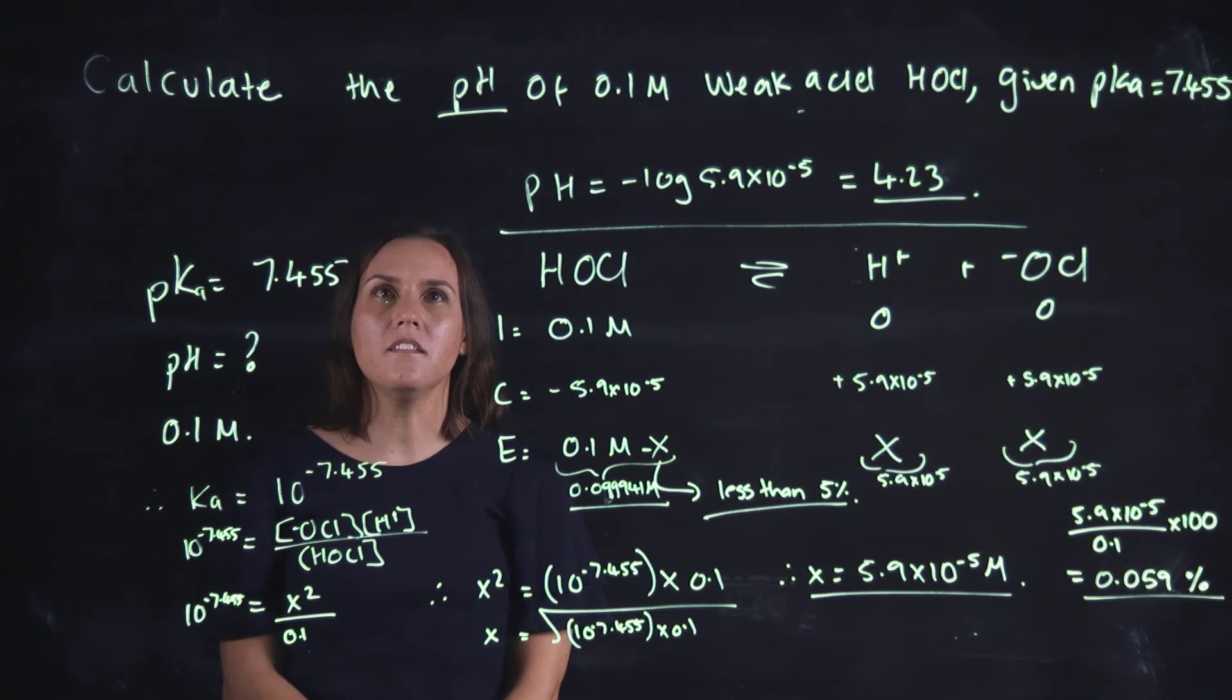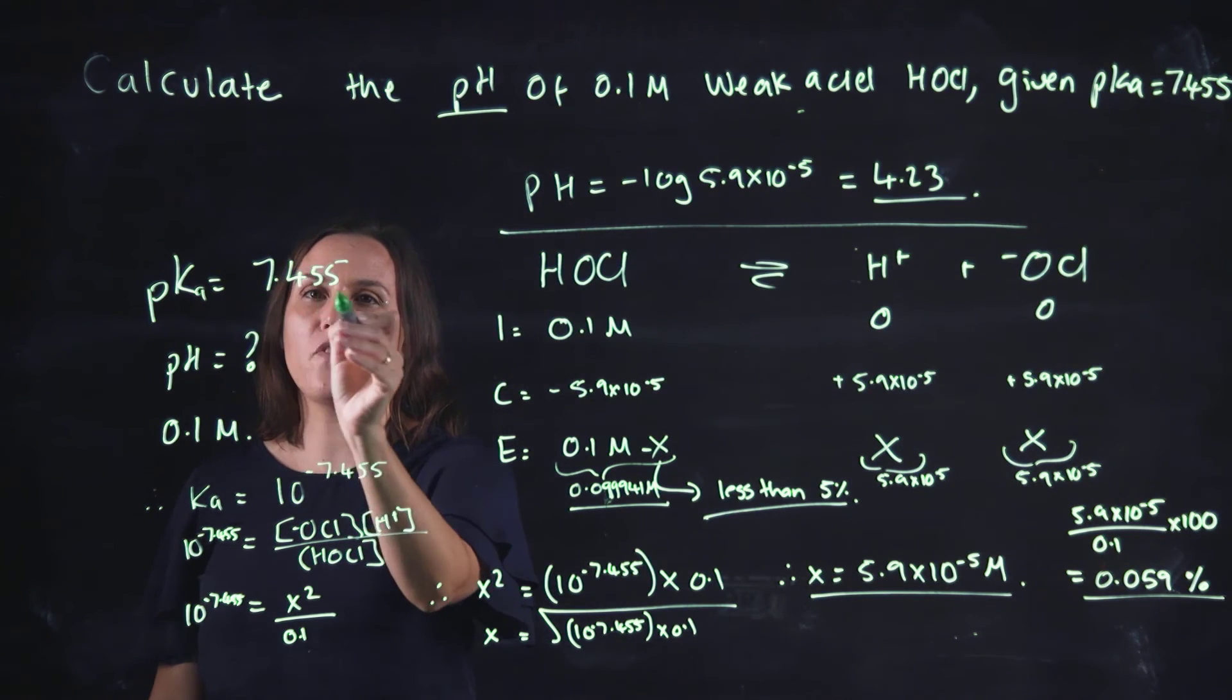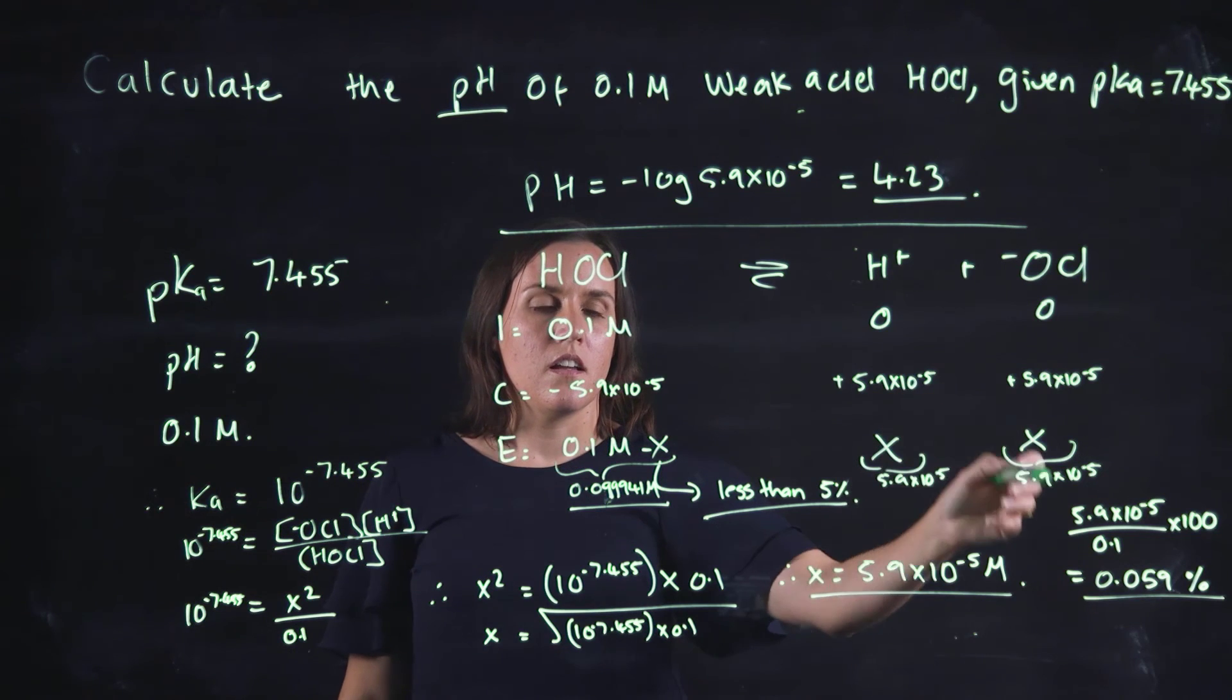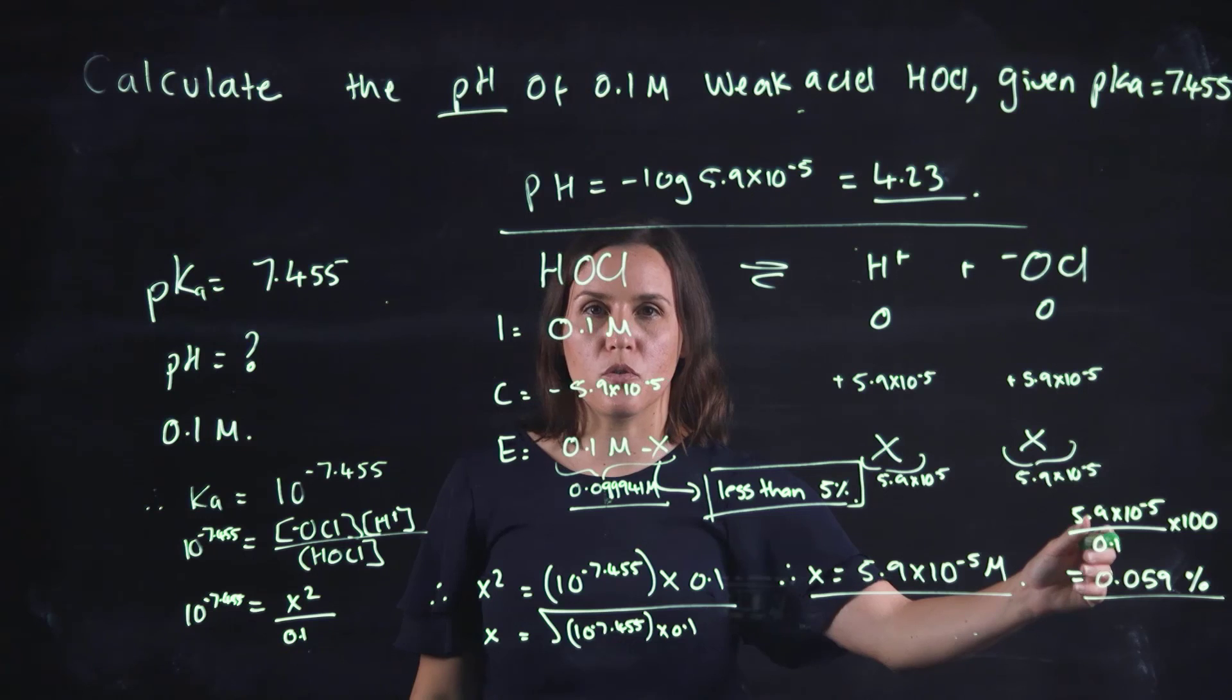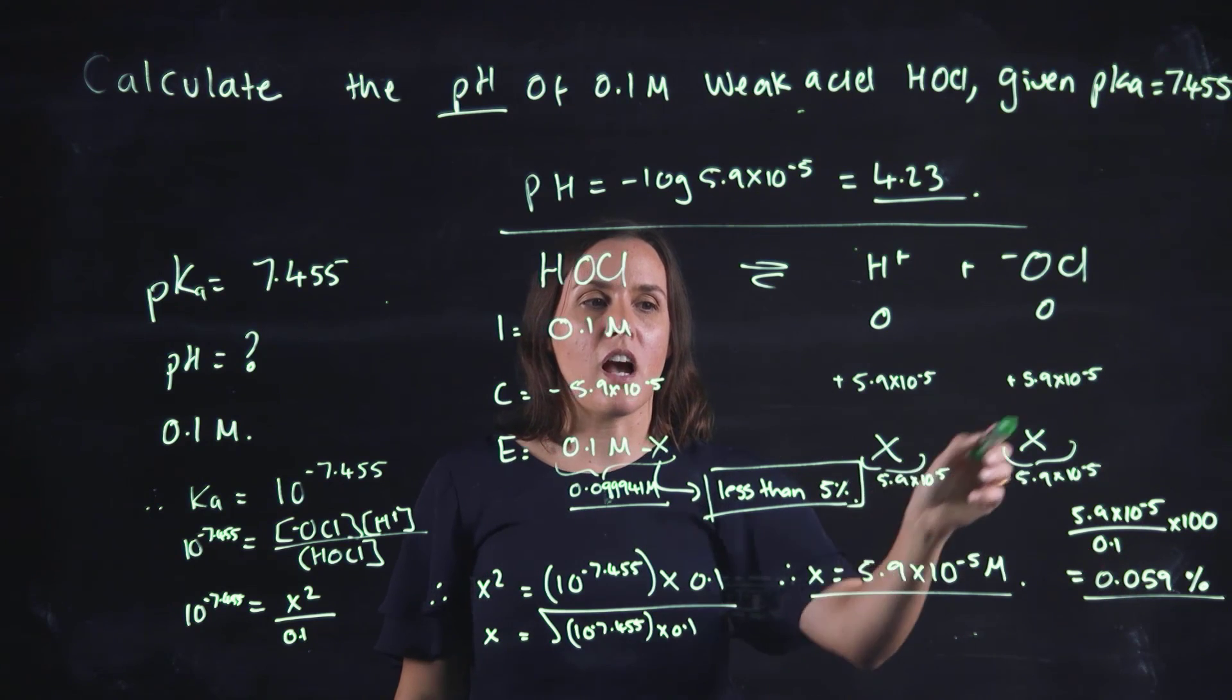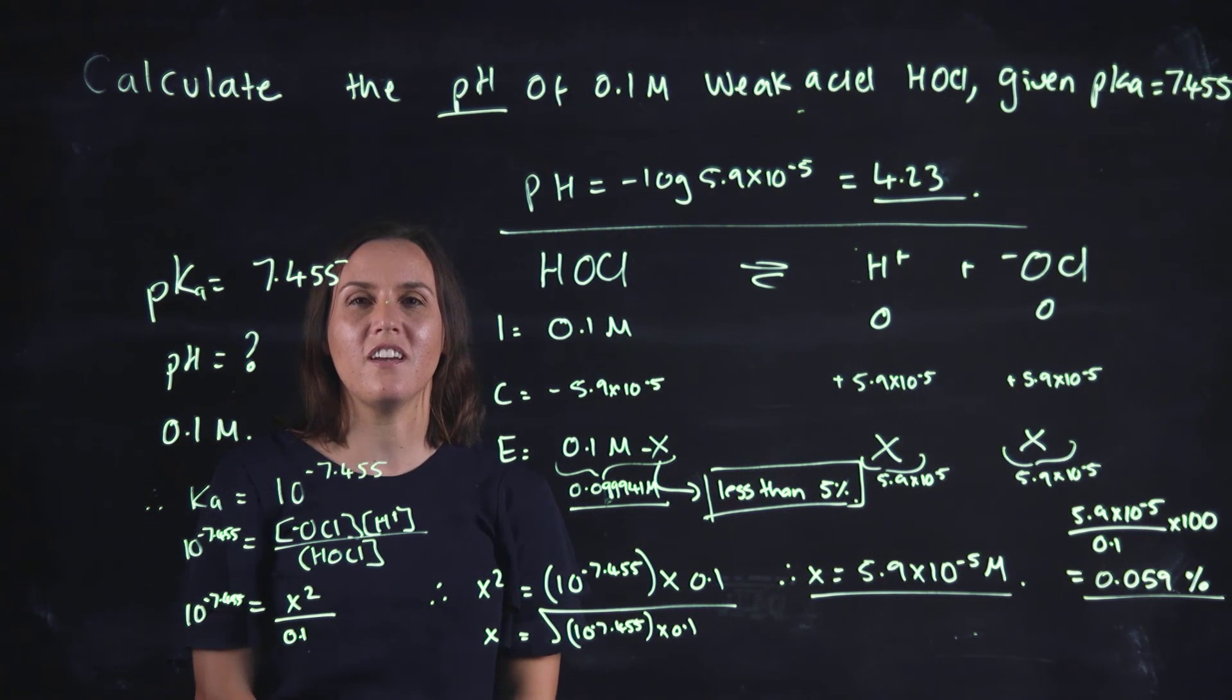So the process here: calculating the pH we need to draw out our ICE table, we're given the pKa now, so with that bit of information we can cross-calculate knowing our Ka to solve for our x. We've made the assumption that it's less than 5%, we need to prove that assumption otherwise we'll have to do a quadratic equation. This is 0.059% so that's fine. Then we can fill out the remainder of the ICE table and show the pH value which would be 4.23. So thank you very much for watching this video and I'll see you next time.